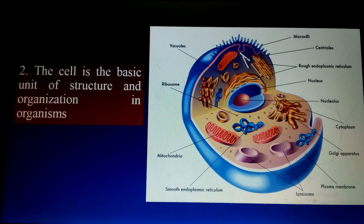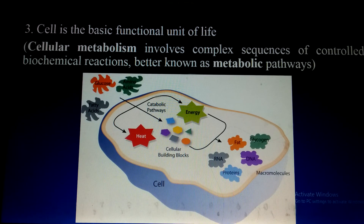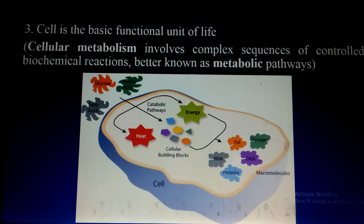So to recap: the first point is that all living organisms are composed of one or more cells; the second point is that the cell is the unit of structure, function, and organization. Now, the cell is also the basic functional unit of life. All cellular metabolism involves complex sequences of biochemical reactions, better known as metabolic pathways. The cell is the functional unit because all functions — like excretion, respiration, and message transmission — are carried out in the cell.